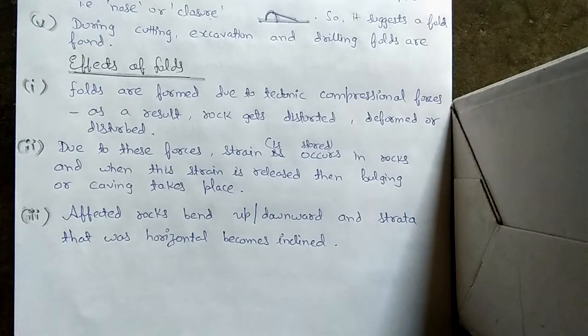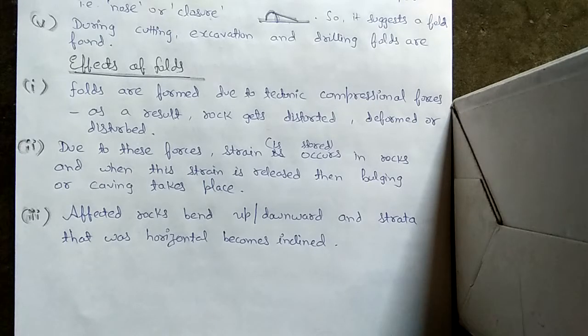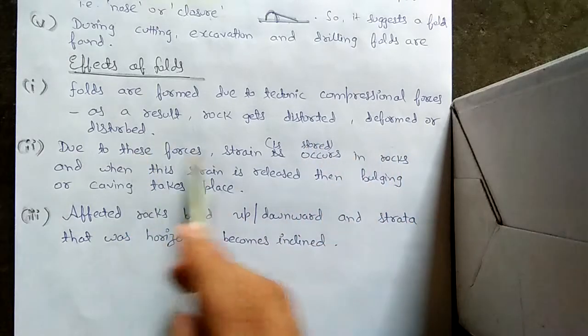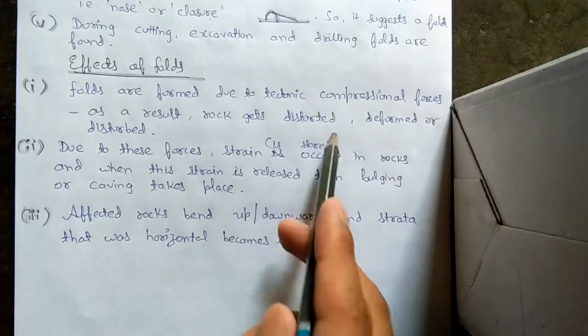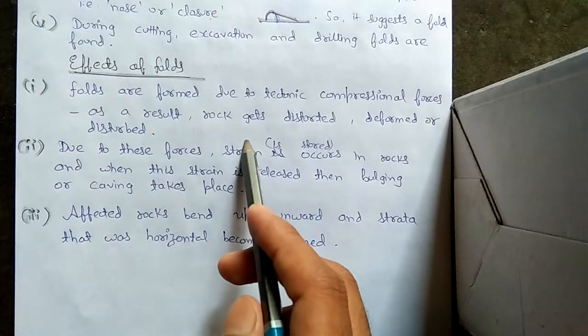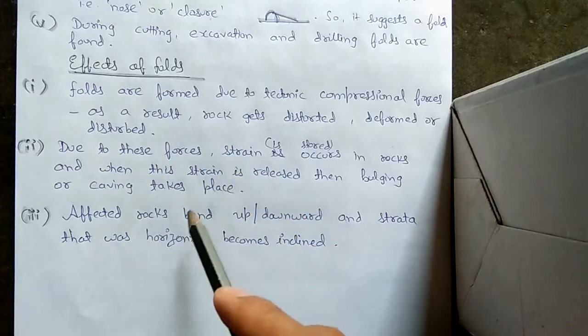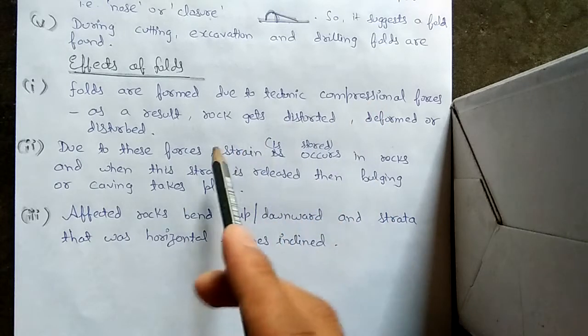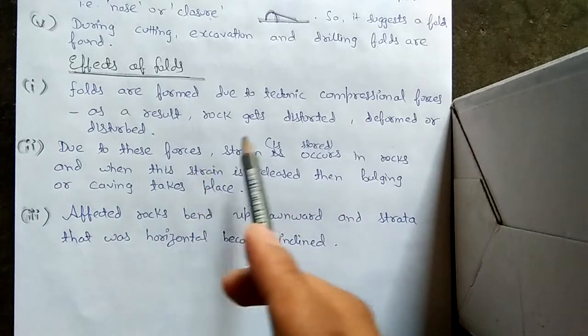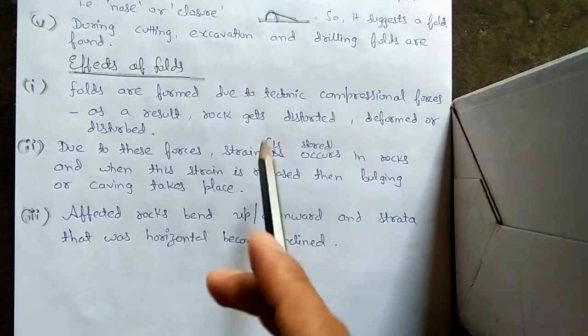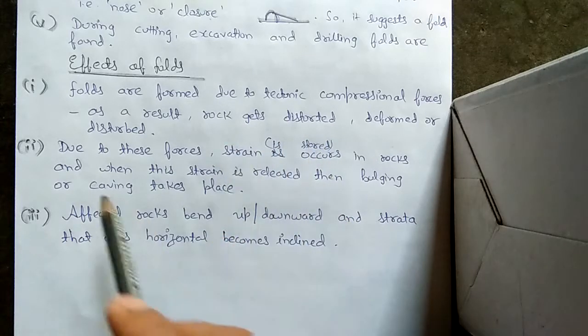As a result, what happens? Rock gets distorted, deformed or disturbed. These all words have the same meaning - distorted and deformed means change in shape and size of the rock. Due to these compressional forces, rocks are disturbed, deformed, and also broken.